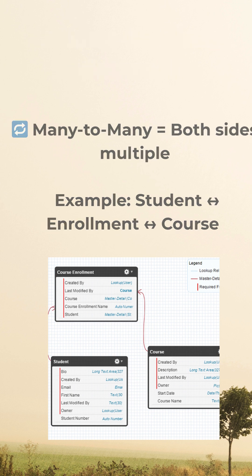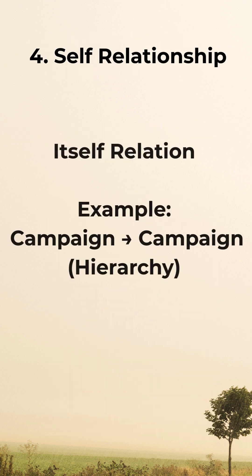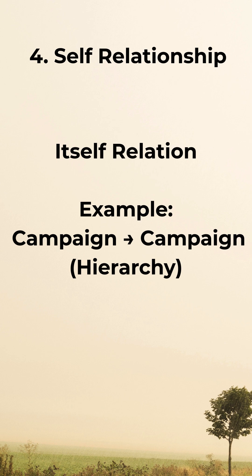Then comes the self-relationship. It's a relationship to itself — specifically, a lookup relationship to itself. For example, a campaign has a lookup to another campaign, which is a parent campaign. That's when you use a self-relationship.